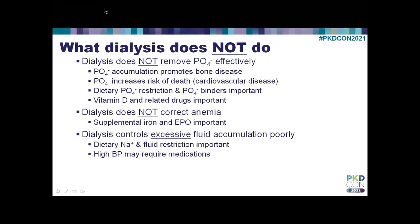There are some things dialysis definitely does not do. It does not remove phosphate effectively. Phosphate accumulation causes bone disease and actually increases the risk of death. So we ask you to restrict dietary phosphate and take phosphate binders. We'll also give you vitamin D and related drugs to try and control some of the effects of phosphate accumulation. Dialysis does not correct anemia; we give supplemental iron and erythropoietin. One of the major advances in treatment of end-stage kidney disease was when recombinant erythropoietin became available. Finally, dialysis will control fluid accumulation but there are limits—if you gain fluid excessively, we may have trouble removing it, and hypertension will require medications in addition to dialysis.